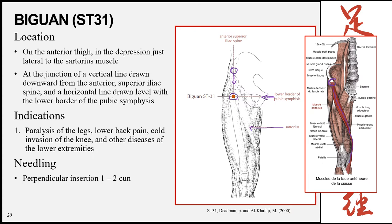ST31 can be used for paralysis of the legs, lower back pain, cold invasion of the knees, and other diseases of the lower extremities. Because we are now in the large muscular area of the thigh, insertion depth increases to 1 to 2 cun, perpendicular.